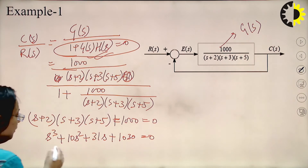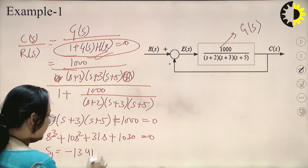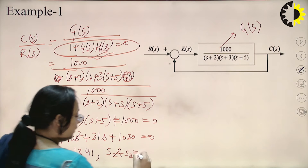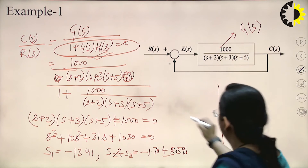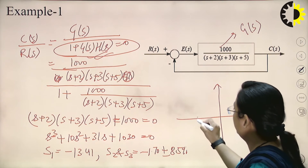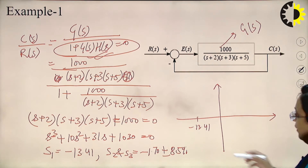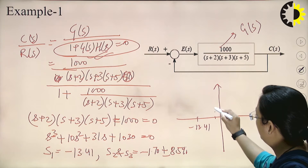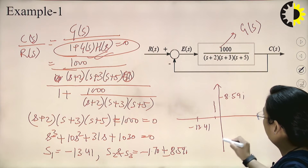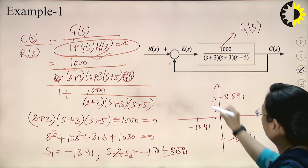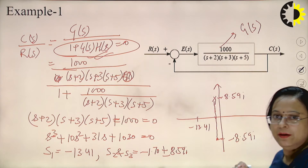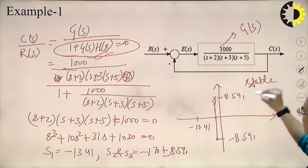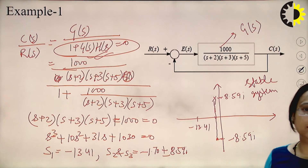When we find the roots, there will be 3 roots for this system: S1 = -13.41, and S2, S3 = -1.70 ± 8.59j. This can be plotted in the S-plane: -13.41 is one root, and the complex pair at -1.70 ± 8.59j are the other two. All three roots are lying in the left half of the S-plane, so this system is called a stable system.